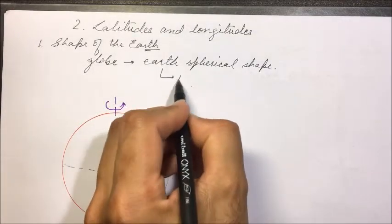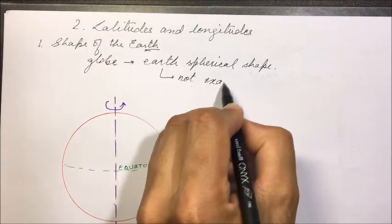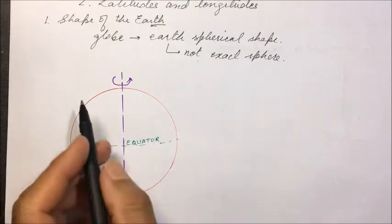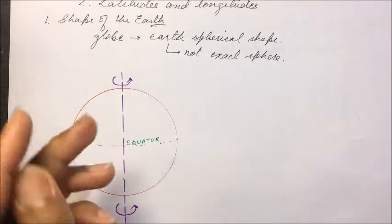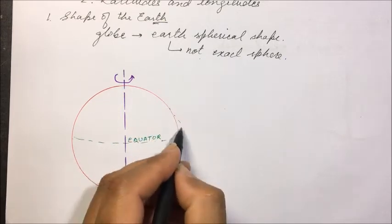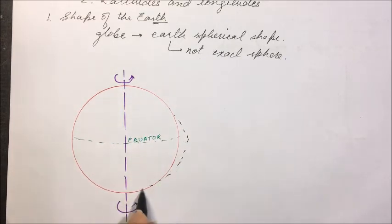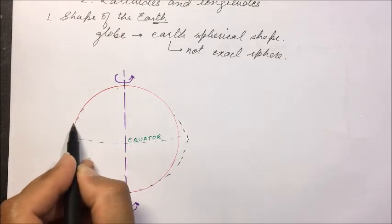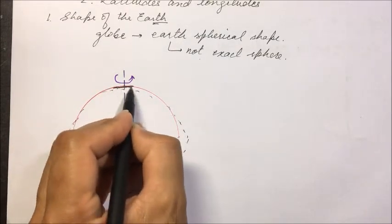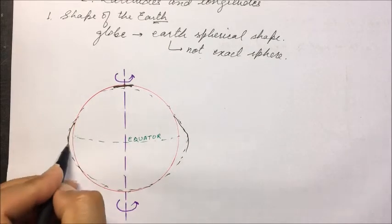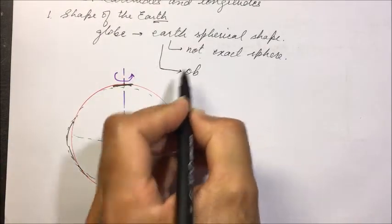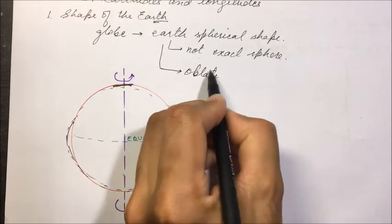But the earth is not an exact sphere — it is slightly misshapen because of its spinning. Because it rotates from west to east, it gets misshapen. It bulges around the equator because of the centrifugal force, and gets flattened at the poles. We call this shape an oblate spheroid.